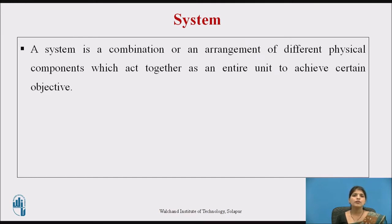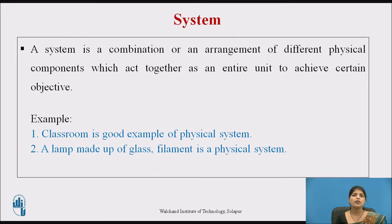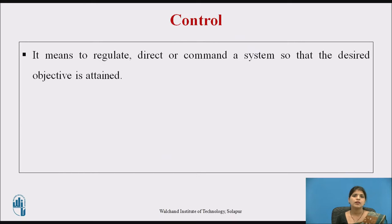After input and output, we will see the system. A system is a combination or arrangement of different physical components which act together as an entire unit to achieve a certain objective. Let us take an example of a classroom — a room along with the combination of benches, blackboards, fans, lighting, and all these arrangements can be called a classroom. A second example is a lamp made up of glass and filament, which is also a physical system.